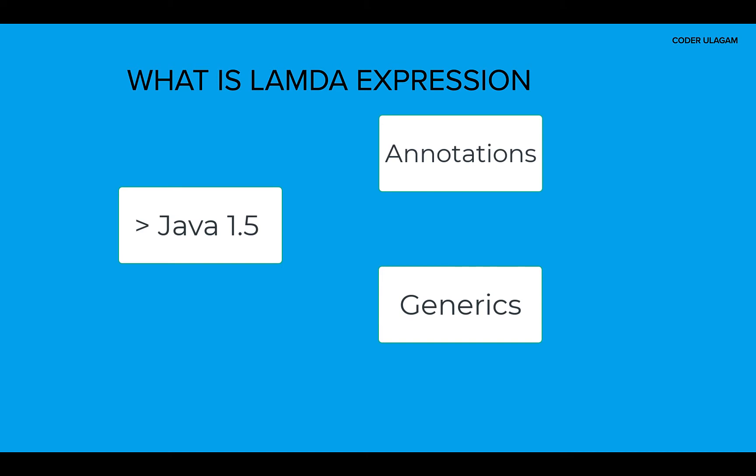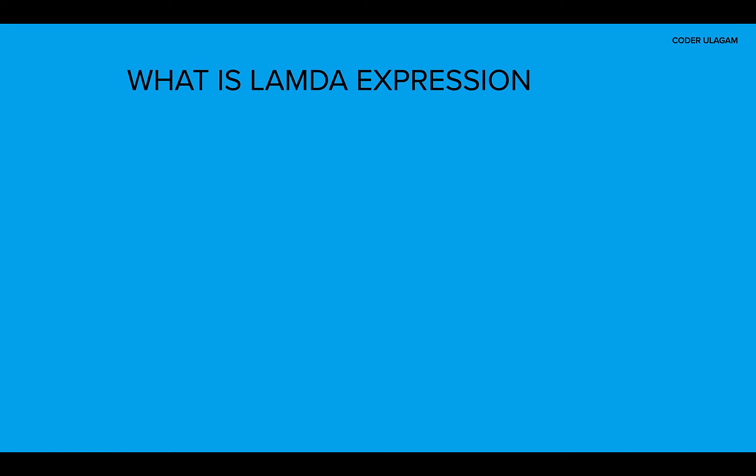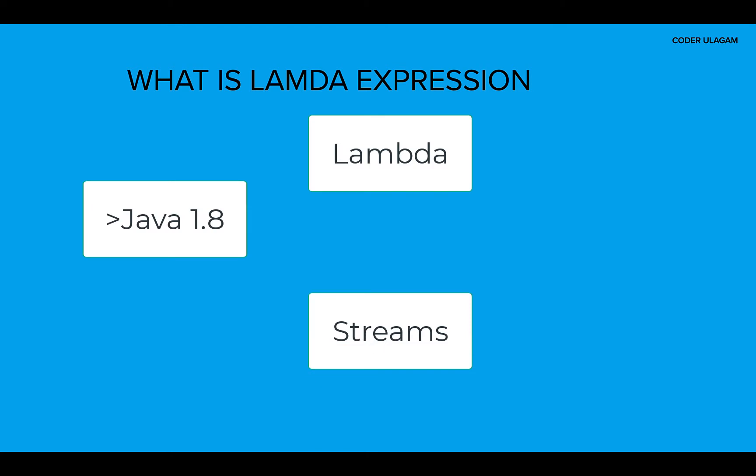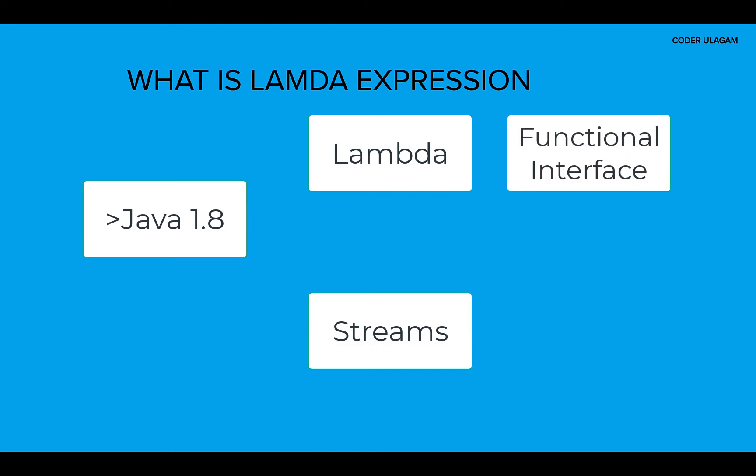As you know, Java 5 introduced annotations and generics. Java 8 revamped with lambdas, functional interfaces, and streams — these are some of the highlights of Java 8. We'll get into each concept later in different videos, but this video I'm going to focus only on lambda expressions. I'll do an example at the end to help you understand better.